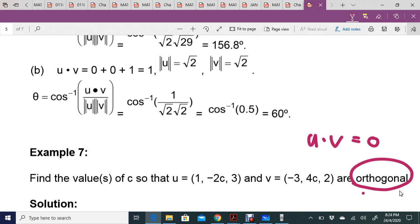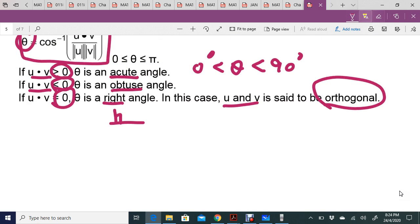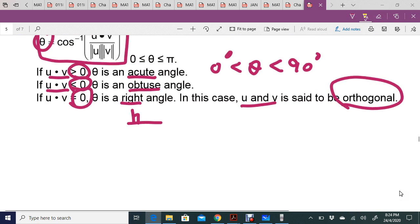So again, what does orthogonal mean? Orthogonal means your u dot v is equal to zero because it's 90 degrees.